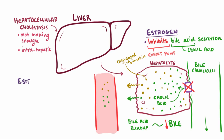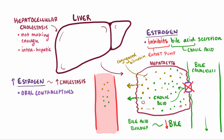Since estrogen's been linked as a primary suspect here, it makes sense that we see hepatocellular cholestasis in situations where estrogen levels might be higher. Since oral contraceptive pills, or birth control pills, use estrogen and progesterone to stop ovulation, it also makes sense that they've been linked to developing cholestasis. Similarly, during pregnancy, estrogen levels can increase a lot, which can lead to pregnancy-induced cholestasis.